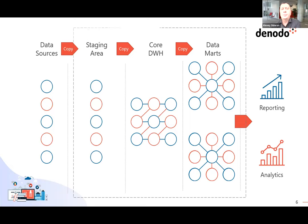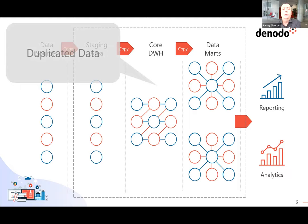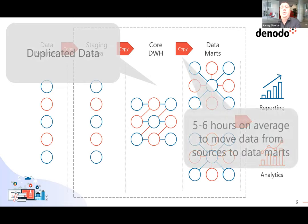The downside of this approach was always clear to data professionals. First of all, we end up having five to ten copies of the same data — very bad from a security perspective, because your data is only as secure as the least secure copy. Another big problem was that it took five to six hours on average to move the data all the way from data sources towards the business-facing data marts, which gave us only the possibility to work with data from yesterday — the D-minus-1 paradigm.